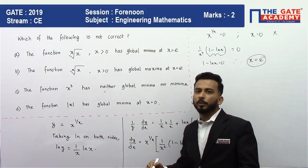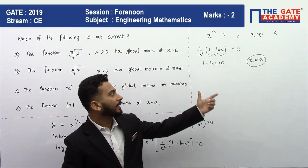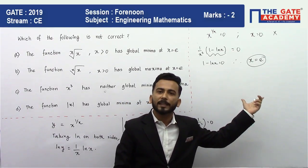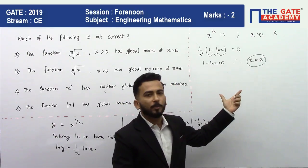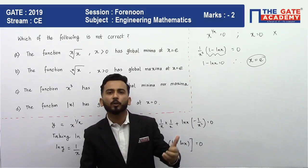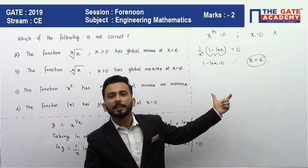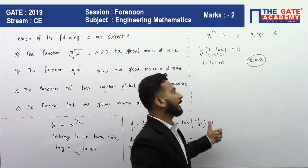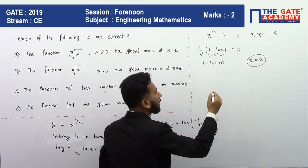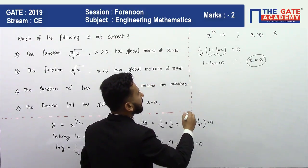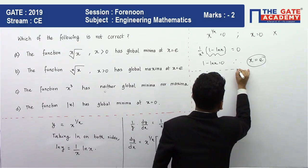So x = e is the stationary point, meaning there is either a global maxima or global minima at this point. To determine which, we apply the second derivative test and find d²y/dx² at x = e.